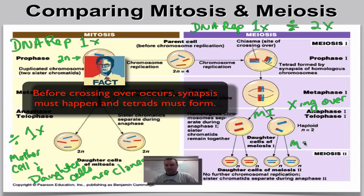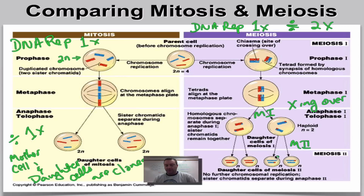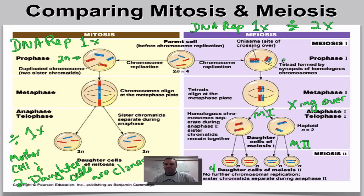Then you're going to go through meiosis number two. You'll notice that all of the daughter cells — and remember, you're going to have four daughter cells here, compared to just two in mitosis — are all genetically different, mainly because of crossing over. You've also gone from diploid, and through the second division — that's the reduction division — you now have daughter cells that are haploid.